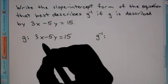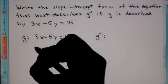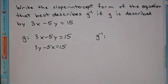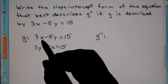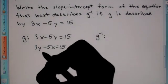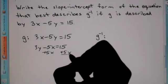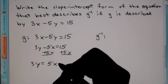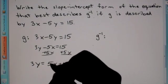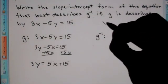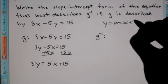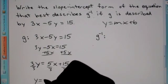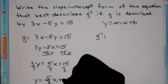The way we find that is we switch the variables. So 3x minus 5y equals 15 becomes 3y minus 5x equals 15. Step one: switch x and y. Step two: get y by itself — move the 5x to the other side. This has x and this doesn't, so you can't combine those — they're not like terms. So we have 3y equals 5x plus 15. Putting x first for slope-intercept form, we then divide by 3 to get y by itself: y equals 5 thirds x plus 5.